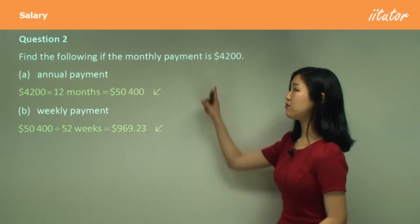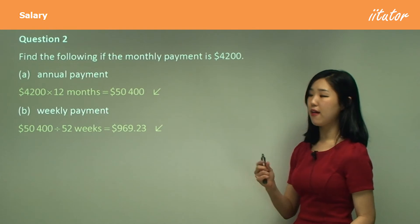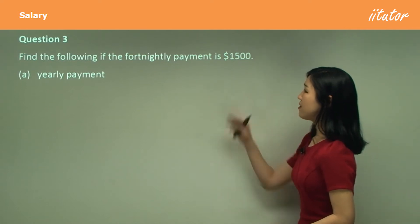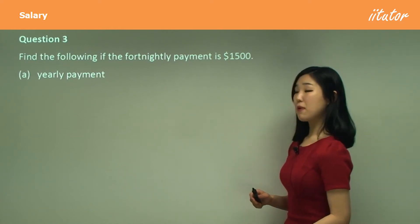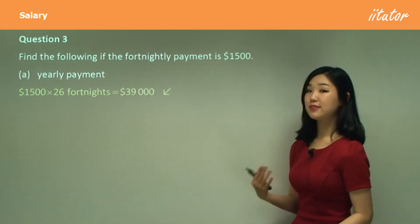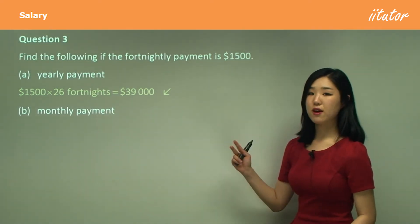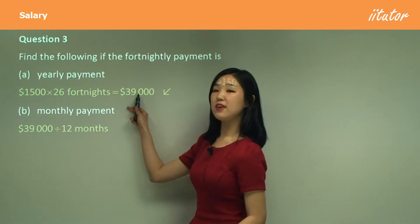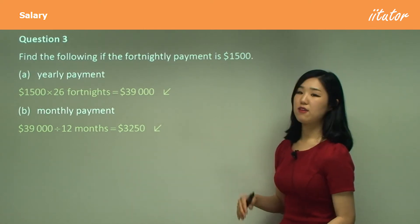Again guys, do not divide this simply by four, because as I said, a month isn't exactly four weeks — that's only a rough value. Question three: find the following if the fortnightly payment is given. So they give you the fortnightly payment. A fortnight is again two weeks. So to get the yearly payment, we know that there's 26 fortnights in a year, so we simply multiply this by 26. And that's your answer. Now the monthly payment — we know a fortnight is two weeks, but we don't assume there's four weeks in a month. So what I'm going to do is divide the yearly payment by 12 to get one month's worth of payment.